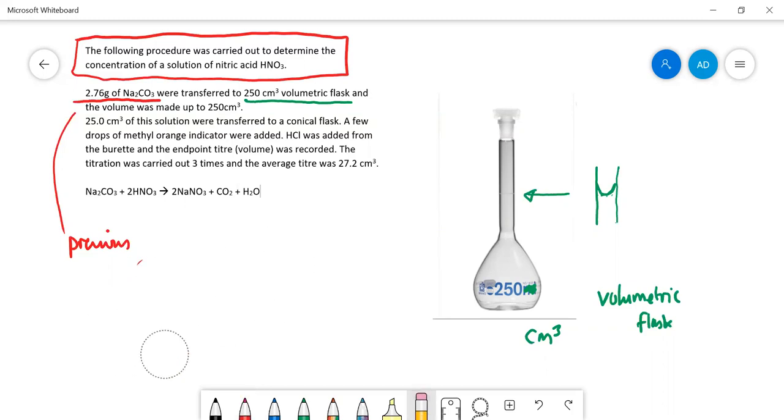The other advantage of doing this is you can do this multiple times. In this experiment, you can just keep pipetting out 25 centimeters cubed at a time into your conical flask and doing the titration. You could actually do it 10 times, but you probably only have to do it three times and then you get an average value.